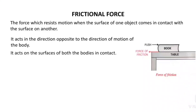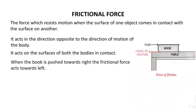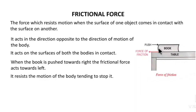Frictional force acts on the surfaces of both the bodies in contact — on the surface of the book as well as on the surface of the table. When the book is pushed towards the right, the frictional force acts towards the left and it resists the motion of the body, tending to stop it.